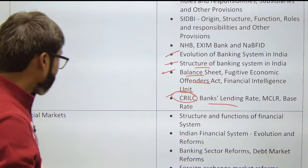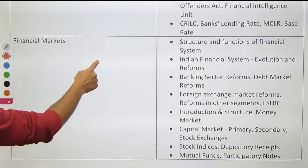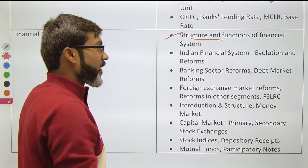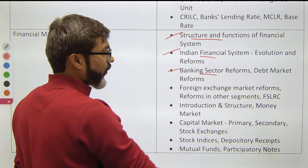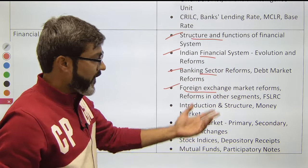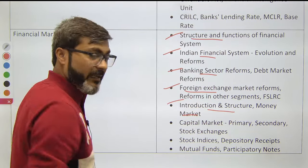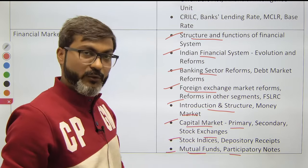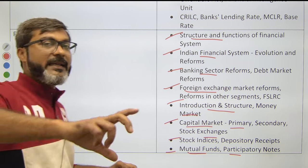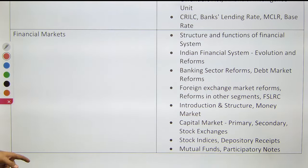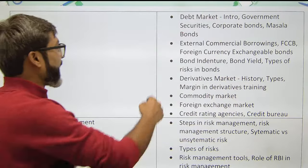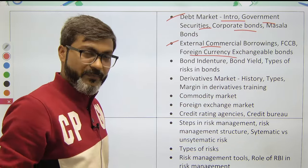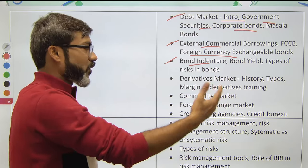The next topic is Financial Markets. Under the Indian financial system you need to study: evolution and reforms — banking sector reforms, debt market reforms, foreign exchange market reforms, reforms in other segments, and FSLRC. Then cover introduction and structure of the money market, capital market — primary and secondary — stock exchanges, stock indices, depository receipts, mutual funds, participatory notes, and foreign currency exchangeable bonds.